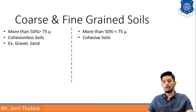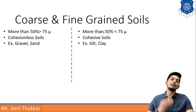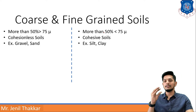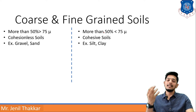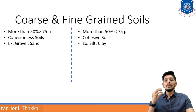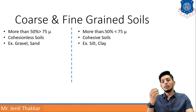If we talk about examples of coarse grained soils, it will be gravel and sand. Gravels on the riverside are having cohesion-less bonding. Same way, cohesive soils like silt and clay are fine grained soils.